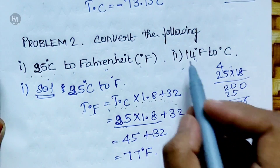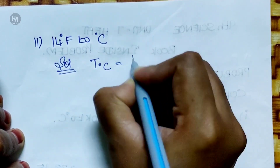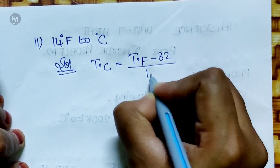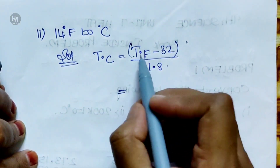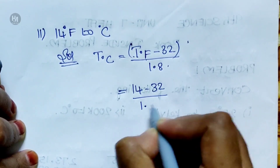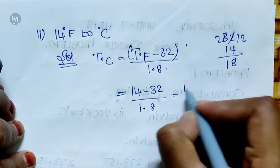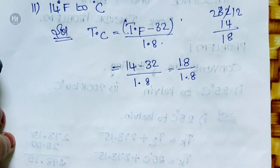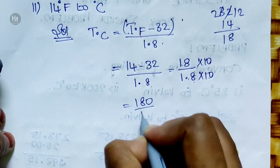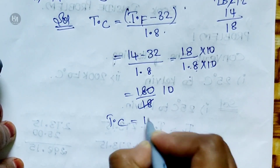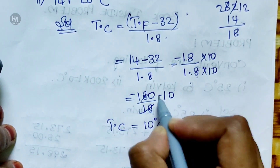Second part: Convert 14 Fahrenheit to Celsius. Formula: TC is equal to TF minus 32 divided by 1.8. Substituting: 14 minus 32 equals minus 18. Then minus 18 divided by 1.8: multiply numerator and denominator by 10 gives minus 180 divided by 18, which equals minus 10. So TC is equal to minus 10 degrees Celsius.